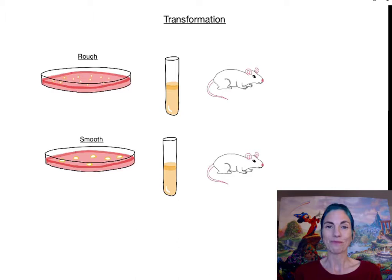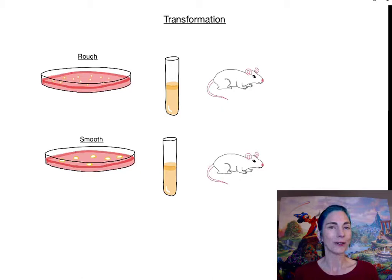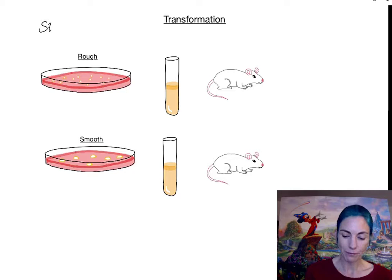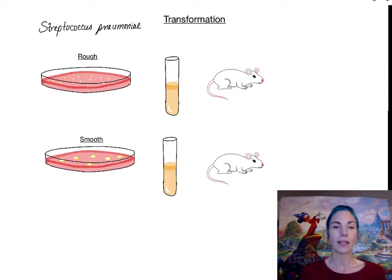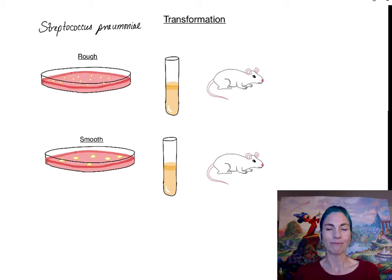We're going to start by learning about how transformation was discovered. Like many scientific discoveries, it was discovered rather serendipitously while the researcher was looking for something else. The year it was first identified was 1928, and the man who identified it was Frederick Griffith. Frederick Griffith was working with strains of Streptococcus pneumoniae, a bacterium that causes a number of different diseases but is probably most famous for causing pneumonia, hence the name.